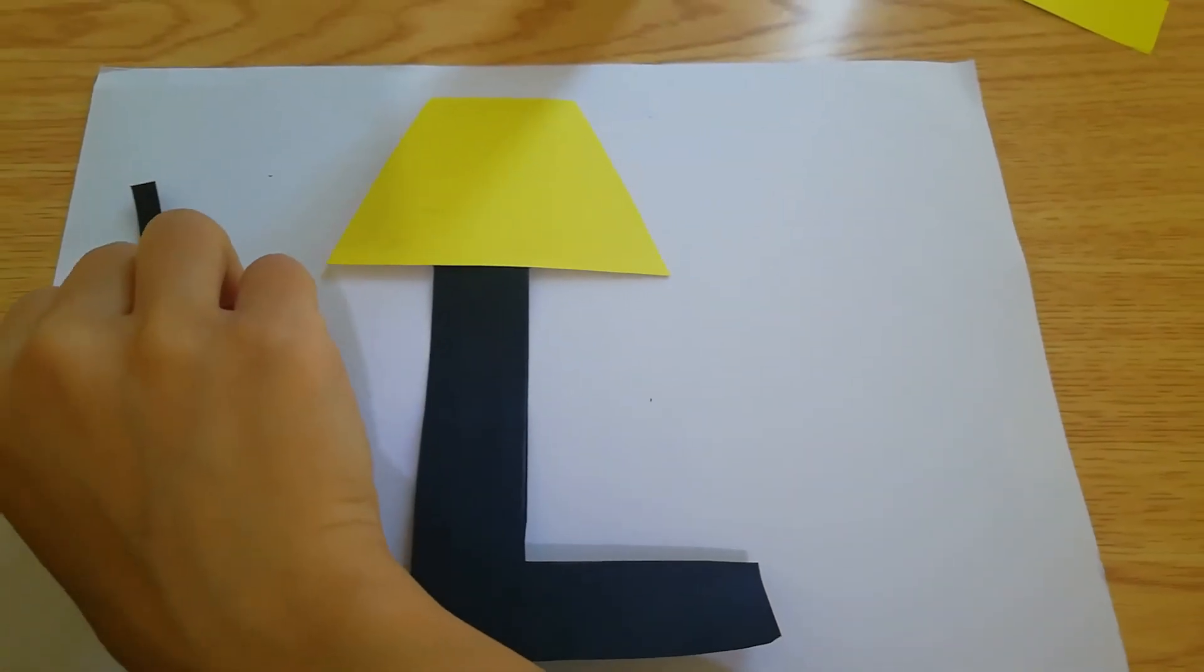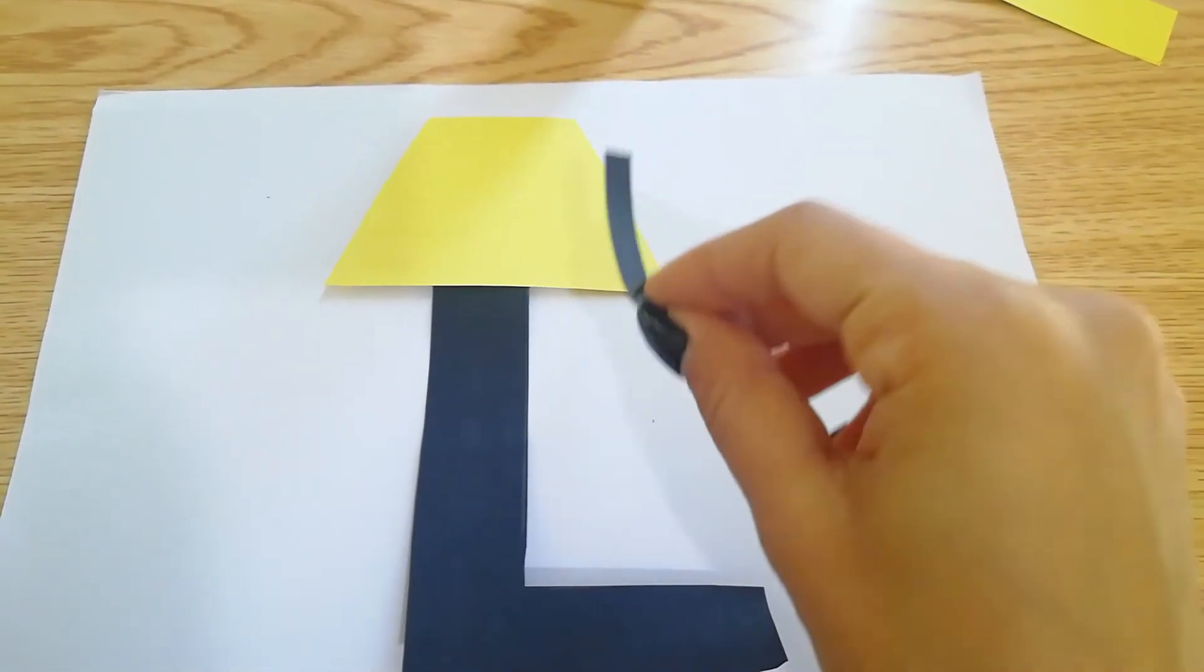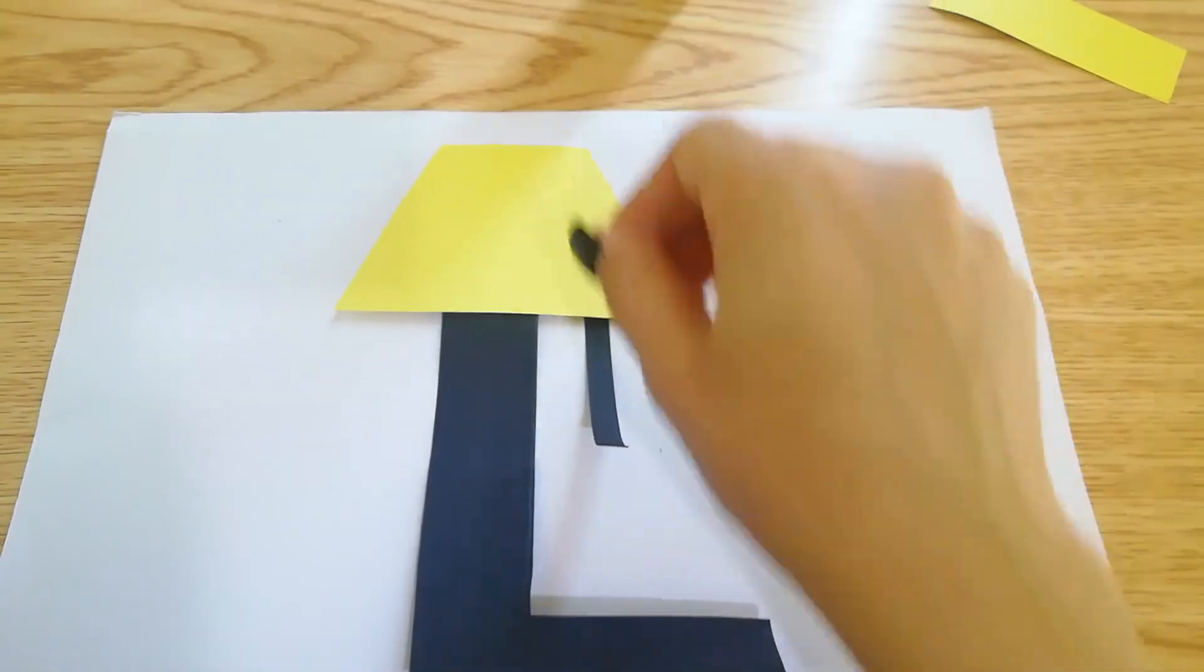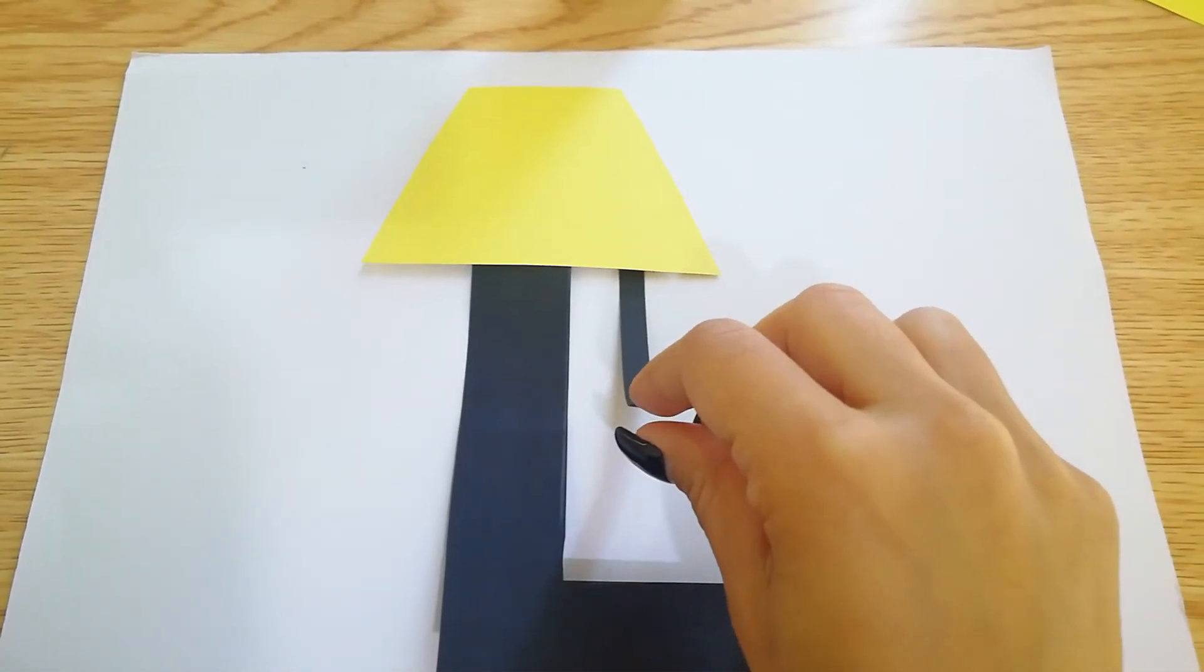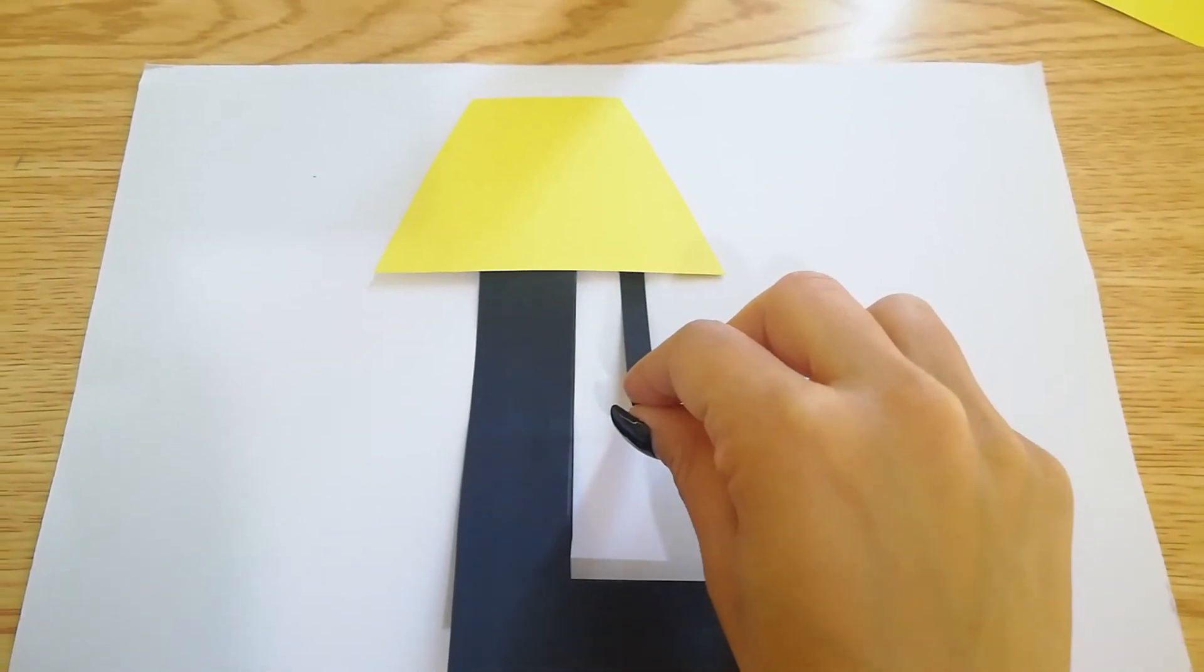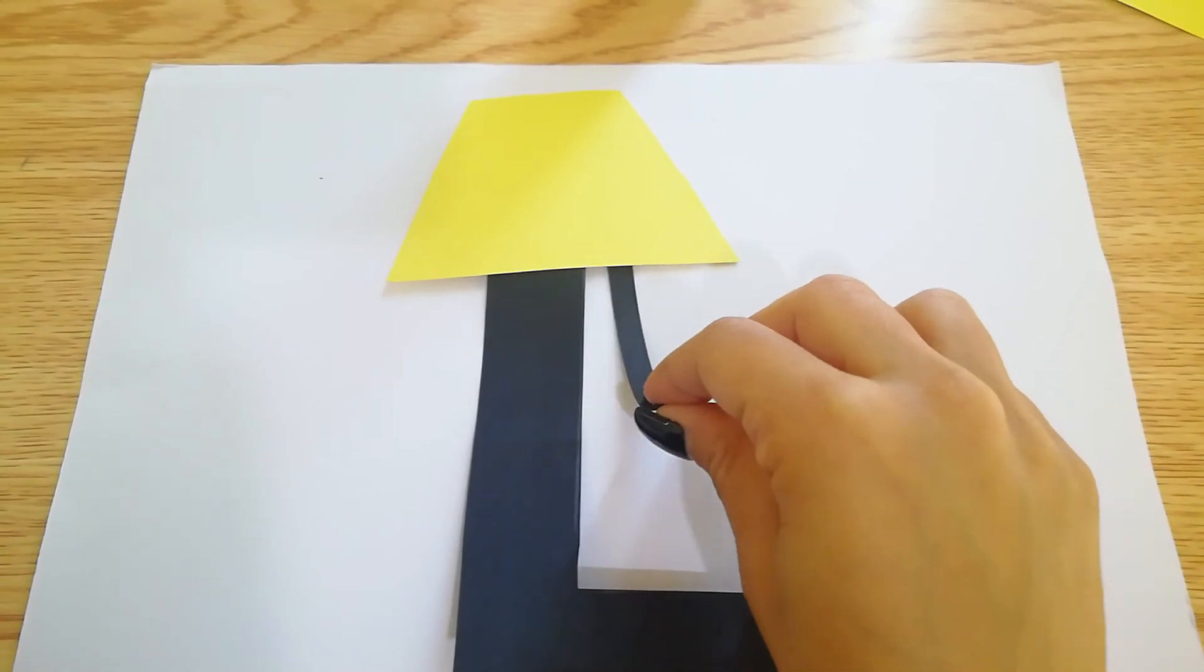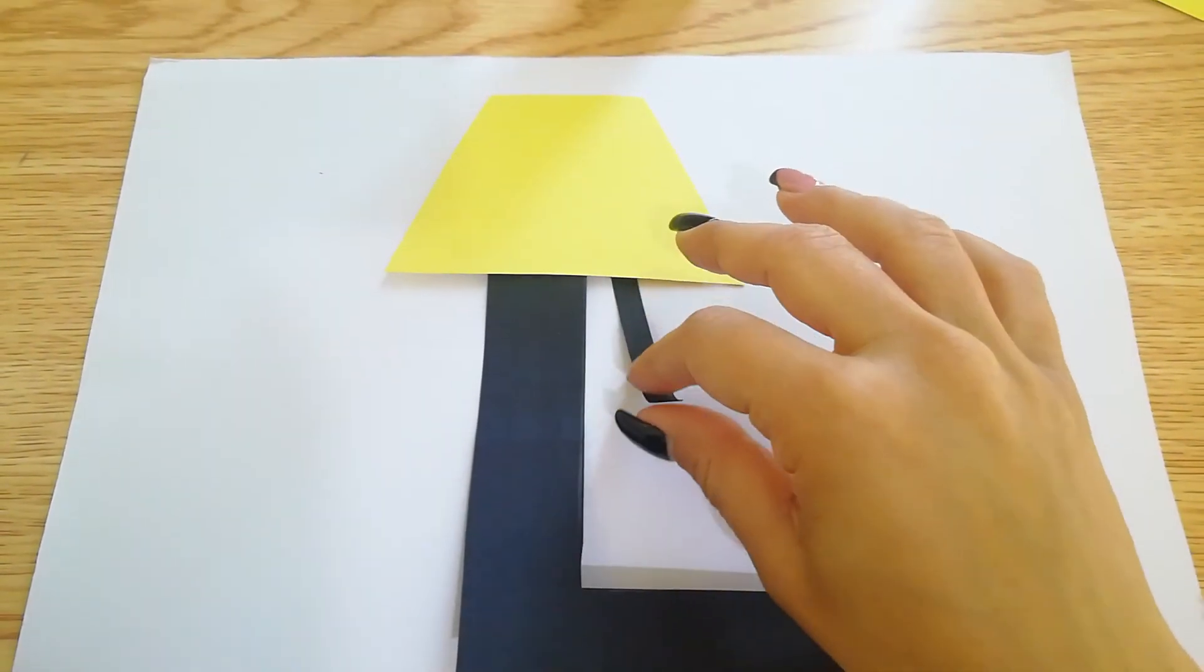And now, I am going to add this rectangle to represent the string that we pull down to turn on or off the light. So, I can put it down to turn on the light, and put it down again to turn off the lamp.